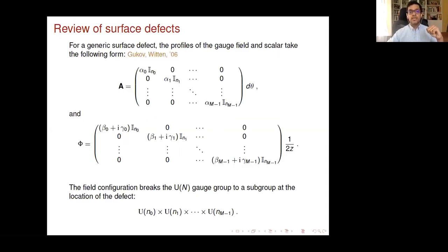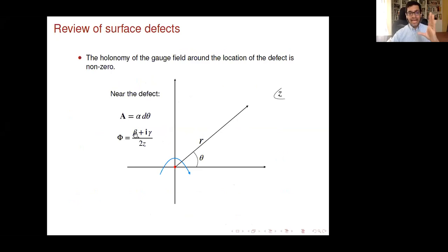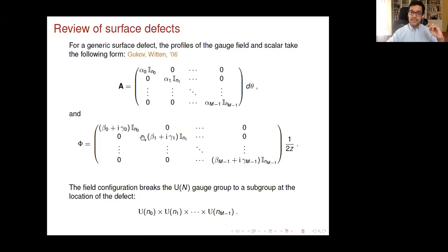For U(N) gauge theory, the parameters alpha, beta, gamma, eta are sets of m real numbers. This profile corresponds to a breaking of the gauge group at the location of the defect: U(N) breaks to a direct product gauge group, where each block is an n_i by n_i identity matrix. The defect is specified by a partition of N, and parameters alpha, beta, gamma specify the singularity of the gauge field and scalar.